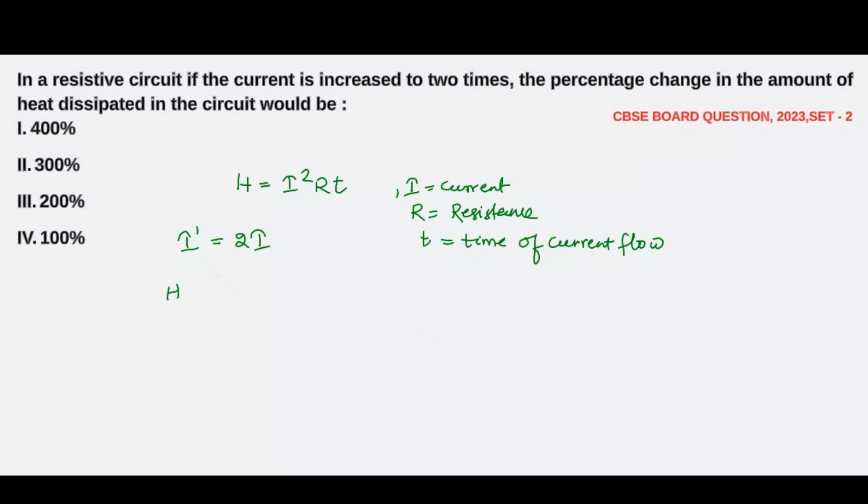Let's write it as H'. New heat would be given by H' = I'²RT. Resistance is constant and time of current flow is also constant. So I' is 2I, putting the values: H' = (2I)²RT = 4I²RT.